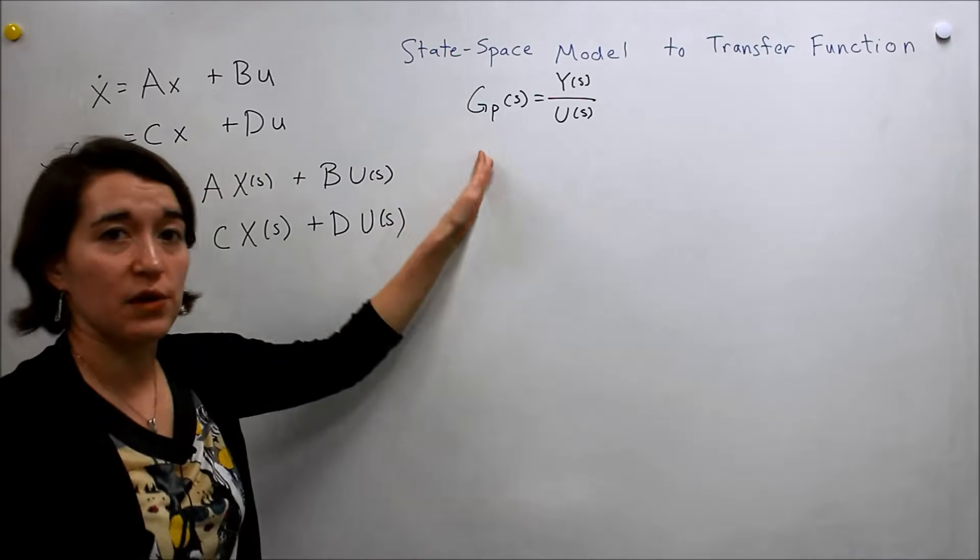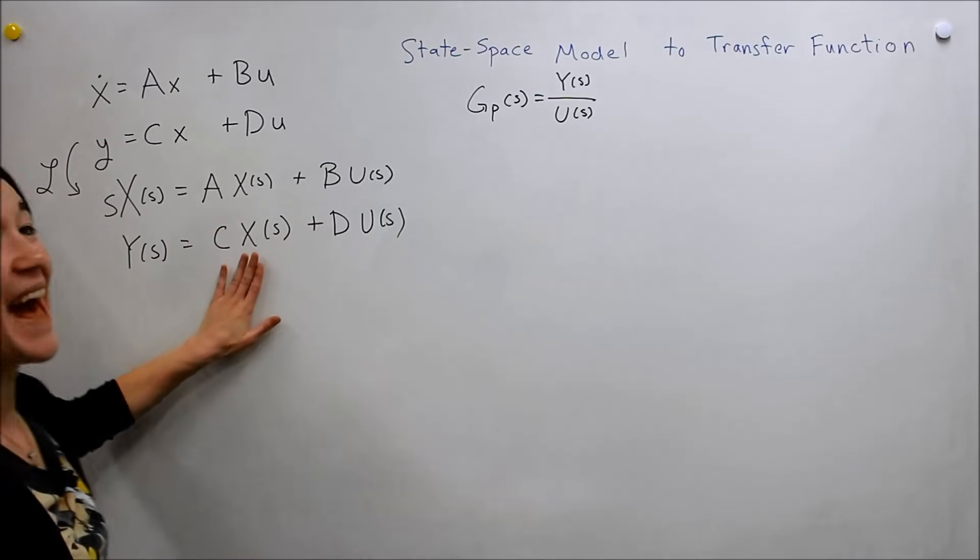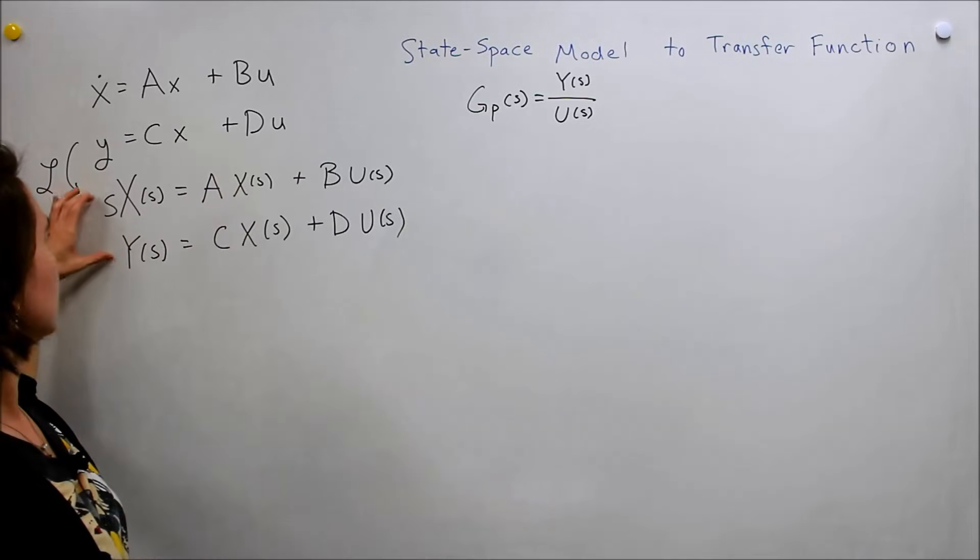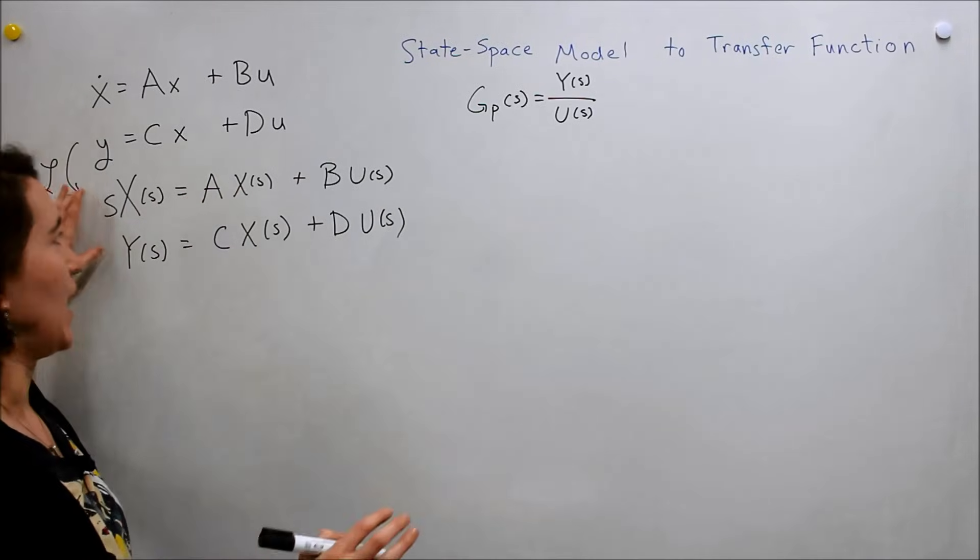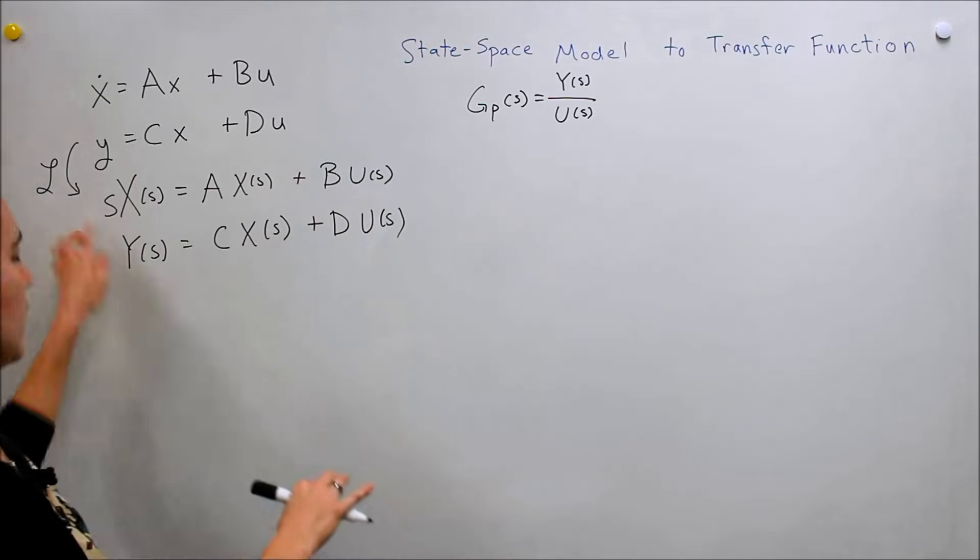And in our transfer function, right, we only want it in terms of our input and output. So we really want to get rid of this x. So we can move these things around, equate these two equations together, and get rid of our x. So let's rewrite our first equation here.